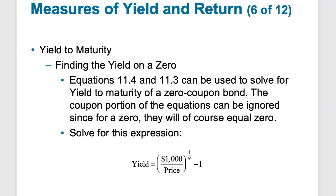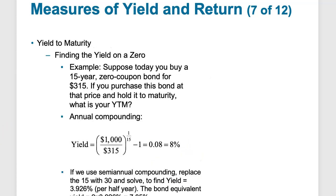Here's an example of finding the yield on a zero-coupon bond: we take $1,000 (the maturity price) divided by the price you purchased it at, raised to the exponent of 1/n (where n is the number of years), then subtract 1. For example, if we buy a zero-coupon bond for $315 with a 15-year term, dividing $1,000 by $315 and raising to the exponent of 1/15, then subtracting 1, gives us an 8% yield on that zero-coupon bond.